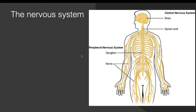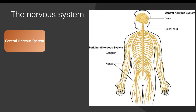The nerves of the nervous system are like wires that transmit electric signals across the body. The nervous system is divided into two parts: the central nervous system and the peripheral nervous system.